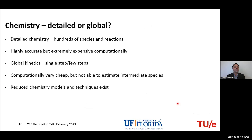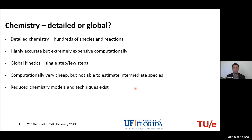Since this is a reactive flow forum, we need to talk about what kind of chemistry we're using. We have two main options: detailed chemistry or global kinetics. With detailed chemistry, we have hundreds of thousands of species and reactions — very computationally expensive but highly accurate, enabling estimation of intermediate species. Global kinetics uses just a single step or a few steps, and cannot estimate species like NOx.